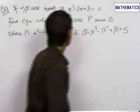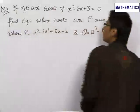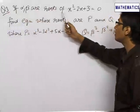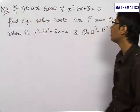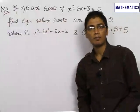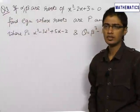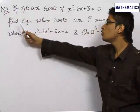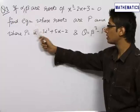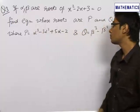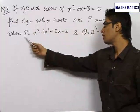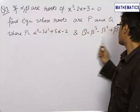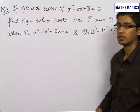In our third problem, we are given that alpha and beta are the roots of the equation x² - 2x + 3 = 0. We need to find the equation whose roots are p and q, where p is given by one expression and q is given by another expression.